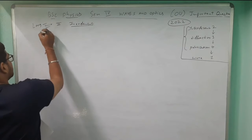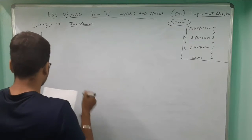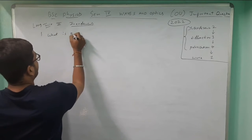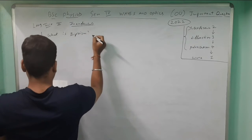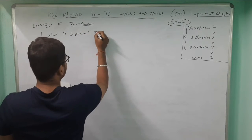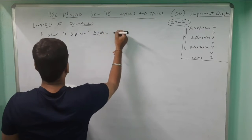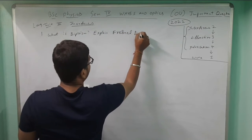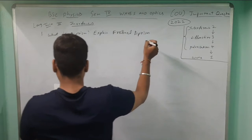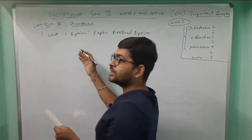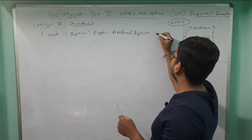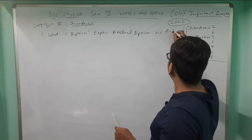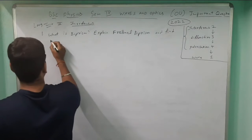The first question for unit two: explain Fresnel Biprism — very much important. You also need to know how to use Fresnel Biprism to find the wavelength of light.